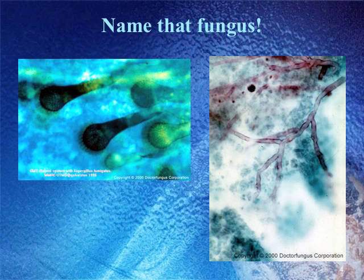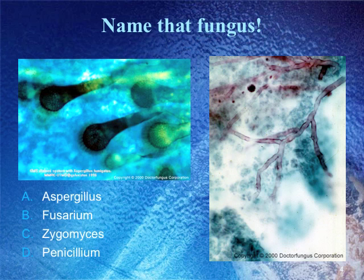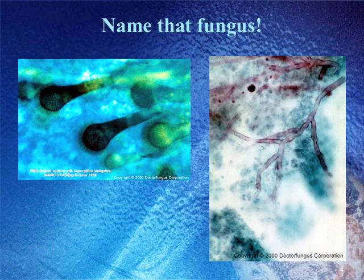Okay, question two. Name that fungus. Is it A, Aspergillus; B, Fusarium; C, Zygomyces; or D, Penicillium? The correct answer is actually Aspergillus. On the left you see the conidia, which are very distinctive. They remind you of the aspergillium, the water-tossing device carried by priests in the Catholic faith that led to the name Aspergillus. On the right you see the distinguishing morphology: septated hyphae branching at 45-degree angles.